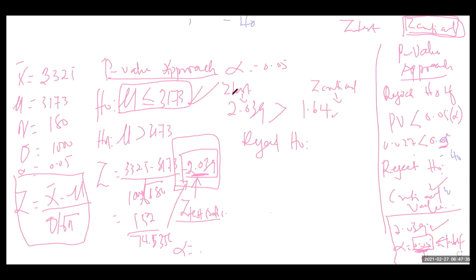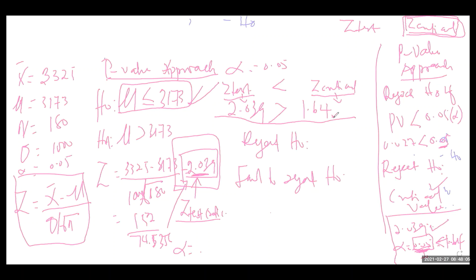Since the Z-test statistic is greater than the Z-critical value, we reject H0. If the Z-test statistic is less than the Z-critical, we fail to reject H0. In our problem, 2.039 is greater than 1.64, so we reject the null hypothesis and conclude that the mean credit card balance for undergraduate students keeps increasing.